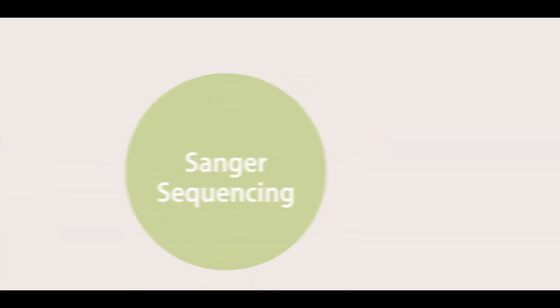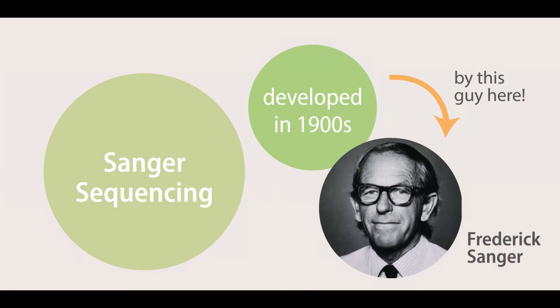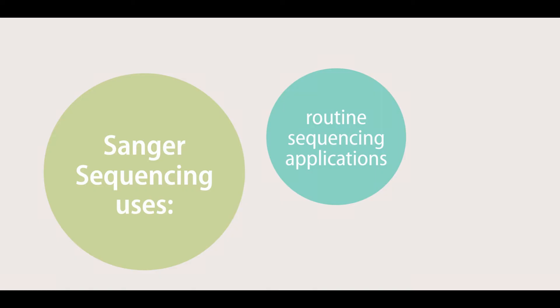Sanger Sequencing, first developed in the 1900s, is the gold standard for DNA sequencing and it is still used today extensively for routine sequencing applications and to validate NGS data.